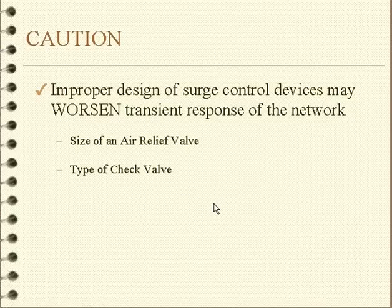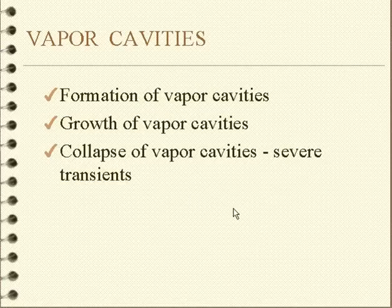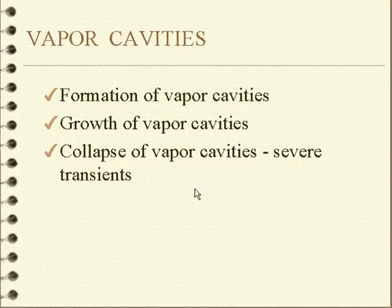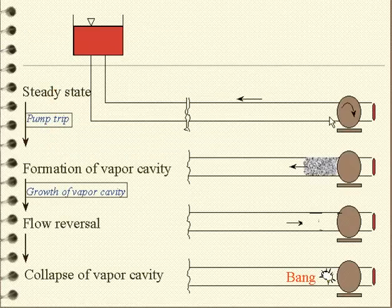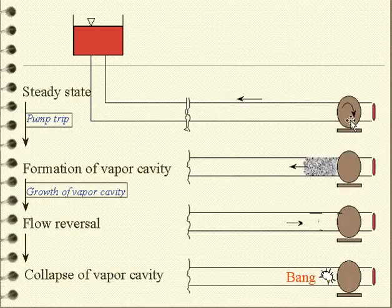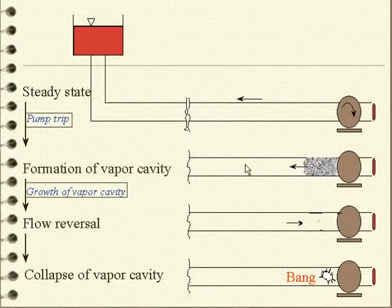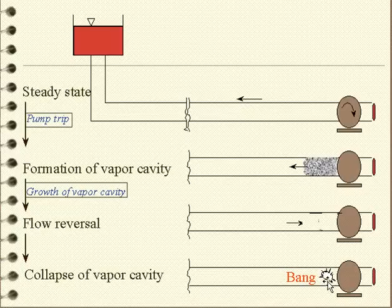Vapor cavities are a large consideration. They form, and if they form, the water column actually separates — and then when it collapses and the water column is joined back together, there's a large deceleration and they can produce pressure transients. Suppose we're pumping water through a pump to an elevated tank and we lose power to the pump. We quickly decelerate the fluid; if the pressure goes too low, the water will cavitate. With low pressure at the pump and higher pressure downstream, eventually the water column will slow down and accelerate back toward the pump, collapsing the cavity, and we'll get a big pressure spike. These are some of the considerations we have to deal with when analyzing transient fluid.